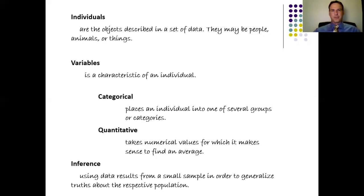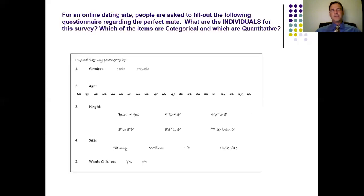Okay, let's do an example to talk about the difference between categorical and quantitative variables. And we're going to use this for a very specific set of individuals. And here's what I got. So for an online dating site, people are asked to fill out the following questionnaire regarding the perfect mate. And you can see what the questionnaire is, and people are asked to circle things or fill in some numbers. And I don't want you to fill it out. What I want you to do is this. If we're considering what this survey is regarding, what are my individuals? Think about that for a second.